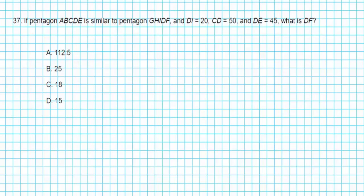Number 37. It says if pentagon ABCDE is similar to pentagon GHIDF, and DI is 20, CD is 50, DE is 45, what is DF? This is the same procedure as problem 36. We have two similar figures, which means corresponding sides are in proportion. Let's call them Pentagon 1 and Pentagon 2.